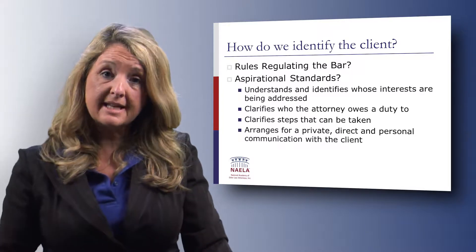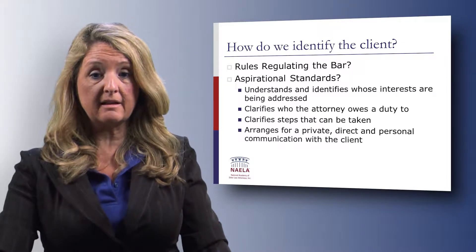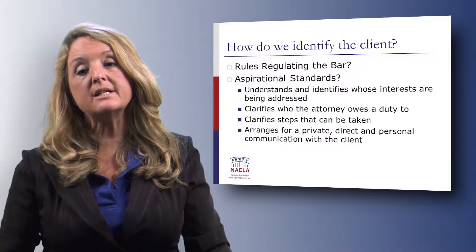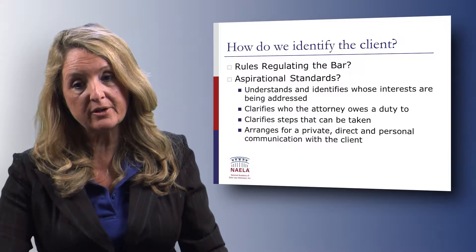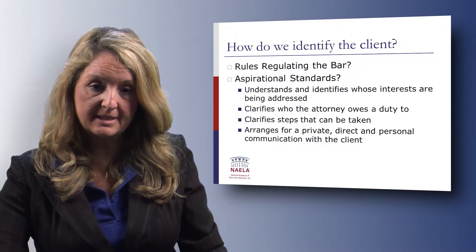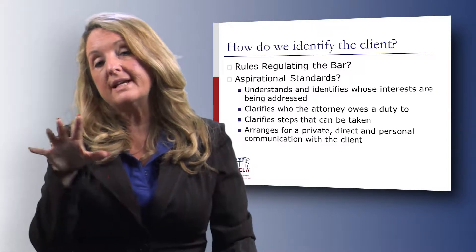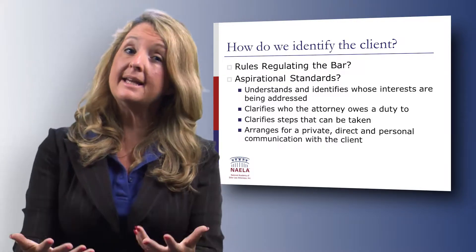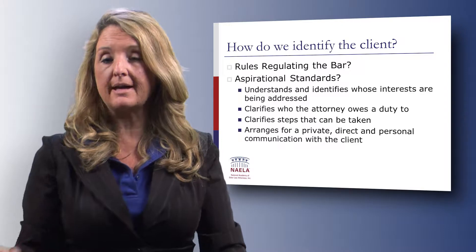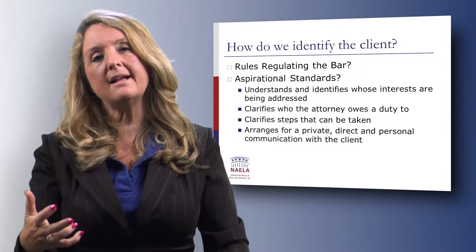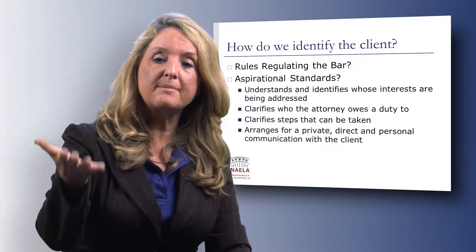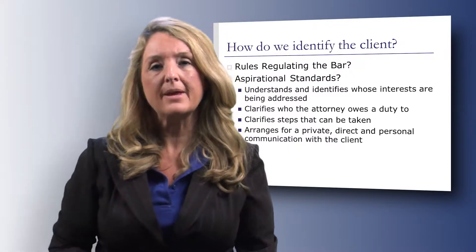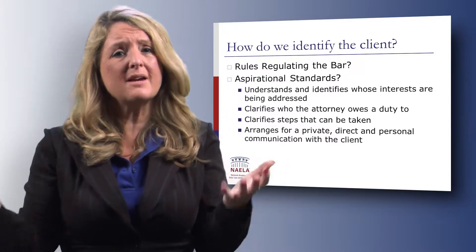The aspirational standards tell us we need to identify the client, understand and identify whose interests are being addressed, clarify who the attorney owes a duty to, clarify steps that can be taken, and arrange for a private, direct, and personal communication with the person identified as the client. But again, the aspirational standards currently in place don't particularly tell us who that person is that we owe a duty to, because sometimes we're addressing several people's interests simultaneously.